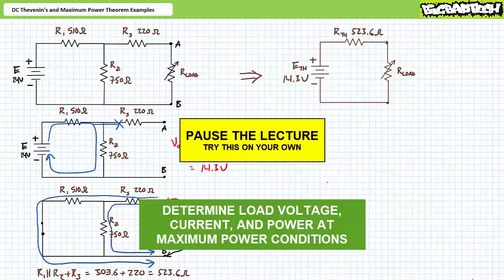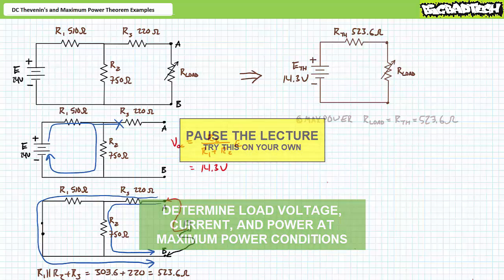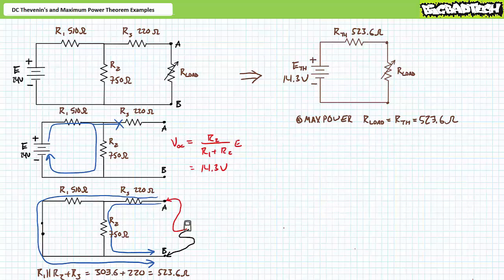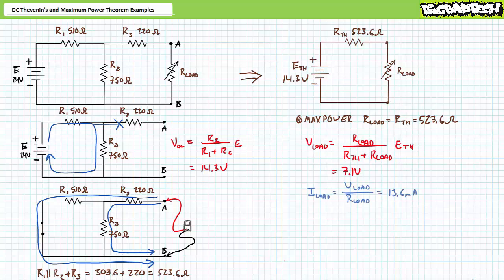By all means, pause the lecture and try stage two on your own. If you're tracking, you should have obtained the following results. The DC Maximum Power Transfer Theorem states that maximum real power will be transferred to a load when the load resistor equals the Thevenin's equivalent resistor. Therefore, our variable load resistor should see maximum power when it has a value of 523.6 ohms. An application of the voltage divider rule suggests voltage across the load at maximum power conditions is 7.1 volts. Ohm's law demonstrates current through the load is 13.6 milliamps, and the DC power formula gives 97.4 milliwatts at maximum power conditions. Any change in load resistor magnitude, more or less, should result in less real power delivery.